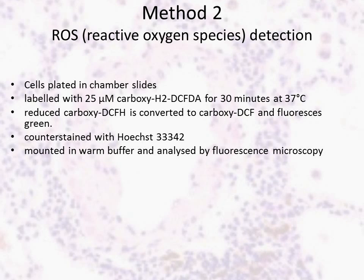Reactive oxygen species detection: cells were plated in chamber slides in either control media or glucose deprivation conditions. They were washed and then labeled with 25 µM carboxyl H2-DCF-DA for 30 minutes at 37 degrees Celsius. In the presence of ROS, the reduced carboxyl DCF-H is converted to carboxyl DCF and fluoresces.